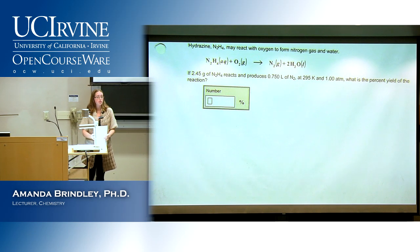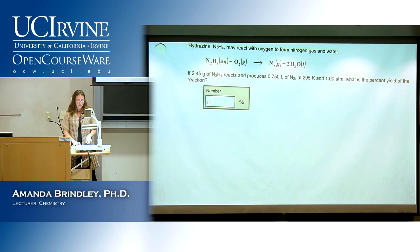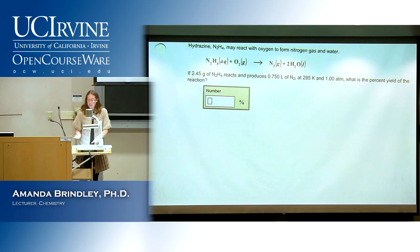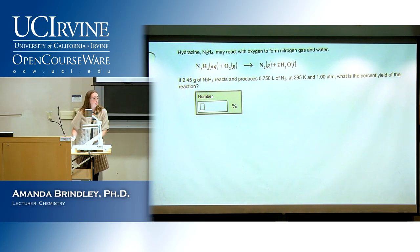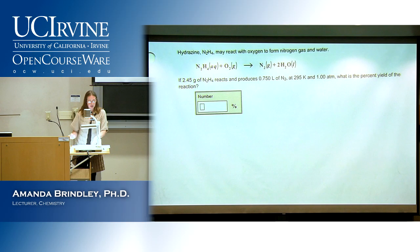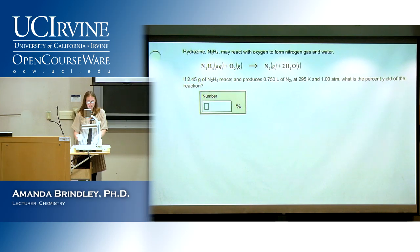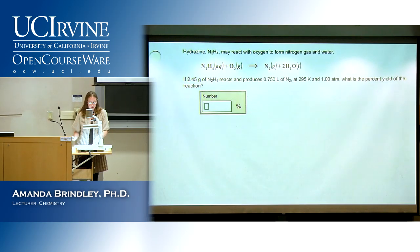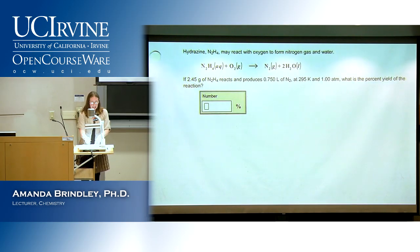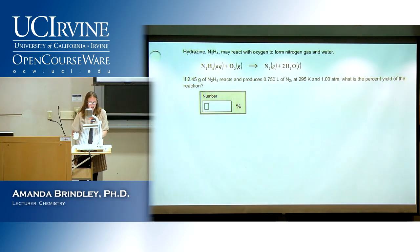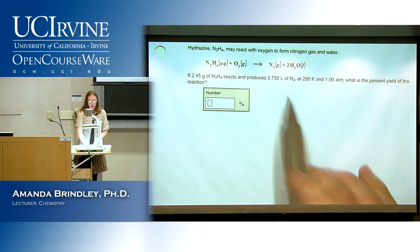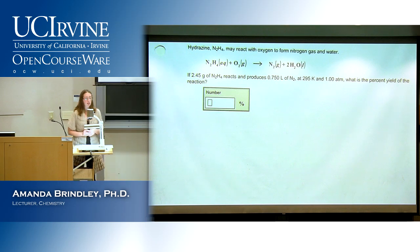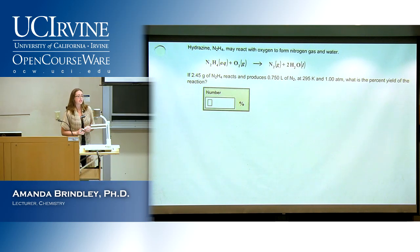So we have hydrazine — you could just name it dinitrogen tetrahydride. They give you this reaction and tell you how much of the hydrazine reacts to produce how much nitrogen. They want to know what's the percent yield.